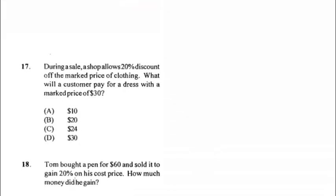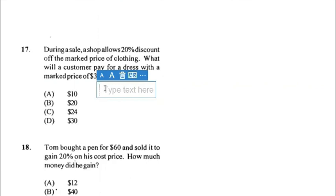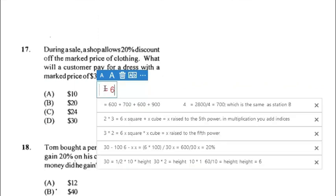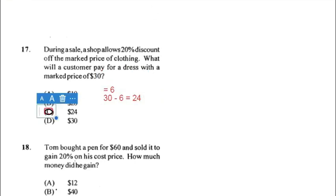Number seventeen: during a sale, a shop allows a 20 percent discount on the marked price of clothing. For a dress with a marked price of $30, the discount is 20 percent of $30 which equals $6. The customer pays $30 minus $6, which equals $24.